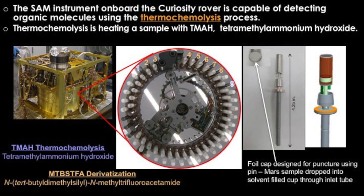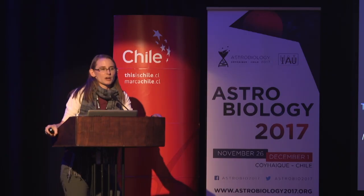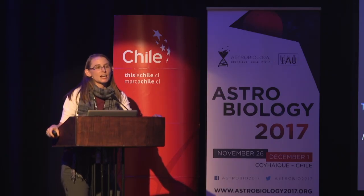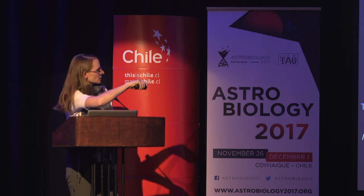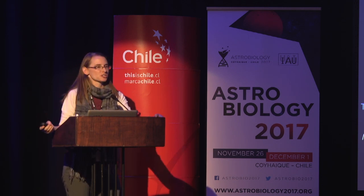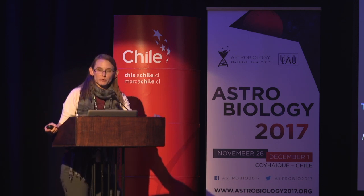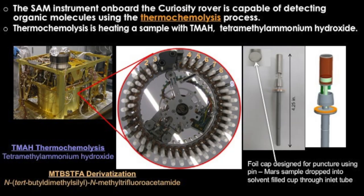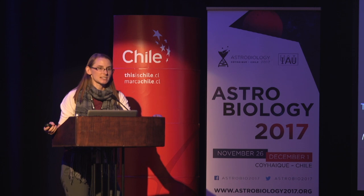Out of all of these cups, only seven contain the reagent MTBSTFA, and only two contain the reagent we're going to talk about today, TMAH. When we're ready to perform this experiment on Mars, we will puncture one of these sample cups that contains the reagent, deliver the solid sample, raise the cup into the SAM oven, and begin the experiment to look for organic molecules.